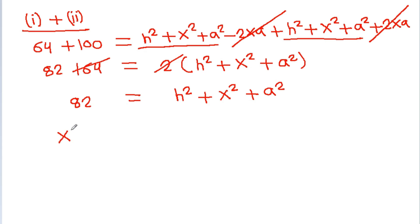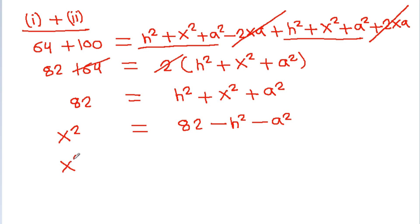So X square it will be equal to 82 minus H square minus A square, which is X square equals 82 minus H square plus A square.